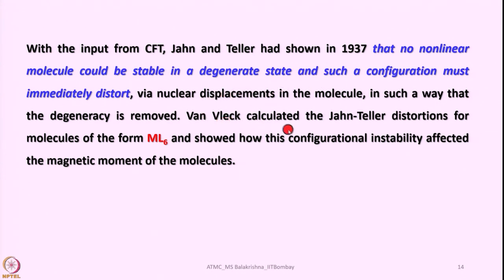Van Vleck calculated the Jahn-Teller distortions for molecules of the form ML6 — that is, octahedral molecules — and showed how this configurational instability affected the magnetic moment of the molecules.